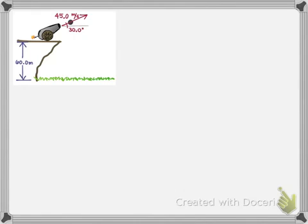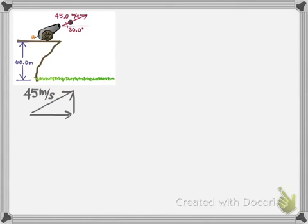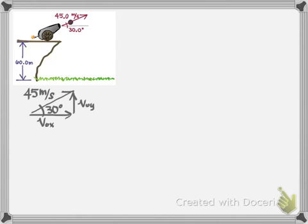To do this problem, let's look at the picture again and look at the initial velocity vector. Let's redraw it as 45 meters per second and make a right triangle out of it, because we need everything in x and y components. To work a two-dimensional motion problem, I need to work it in the horizontal and vertical directions. So there's the horizontal velocity vector and the vertical velocity vector — the x and y components of this initial velocity of 45 meters per second — and we were given an angle of 30 degrees.